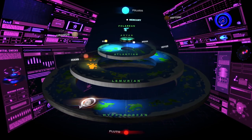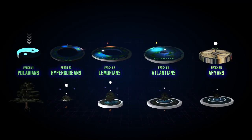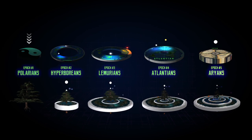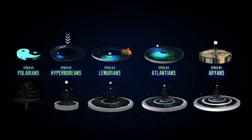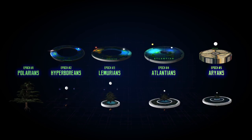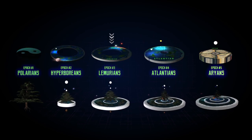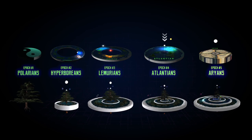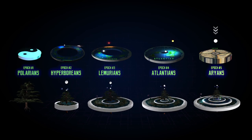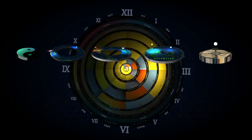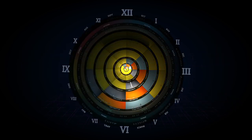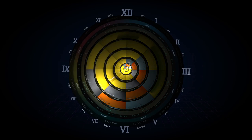In summary, we have 5 epochs so far. The master race, the Polarians, 24,000 years later, the Hyperborean realm was created, 24,000 years after that, the Lemurian realm was created, then the Atlantean, then the Aryan. And according to many ancient scriptures, mythologies, and mystics, there are 2 more epochs to come, meaning 7 epochs, 7 earthly realms, and 7 root races.